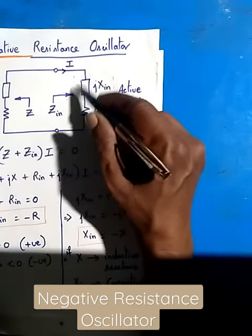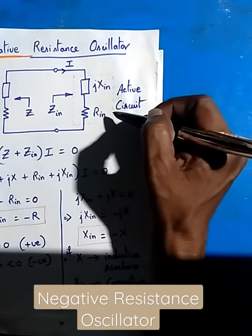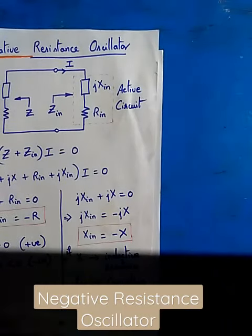So for choosing the active circuit, it must have negative resistance. We must use a component that will have negative resistance. Thank you.